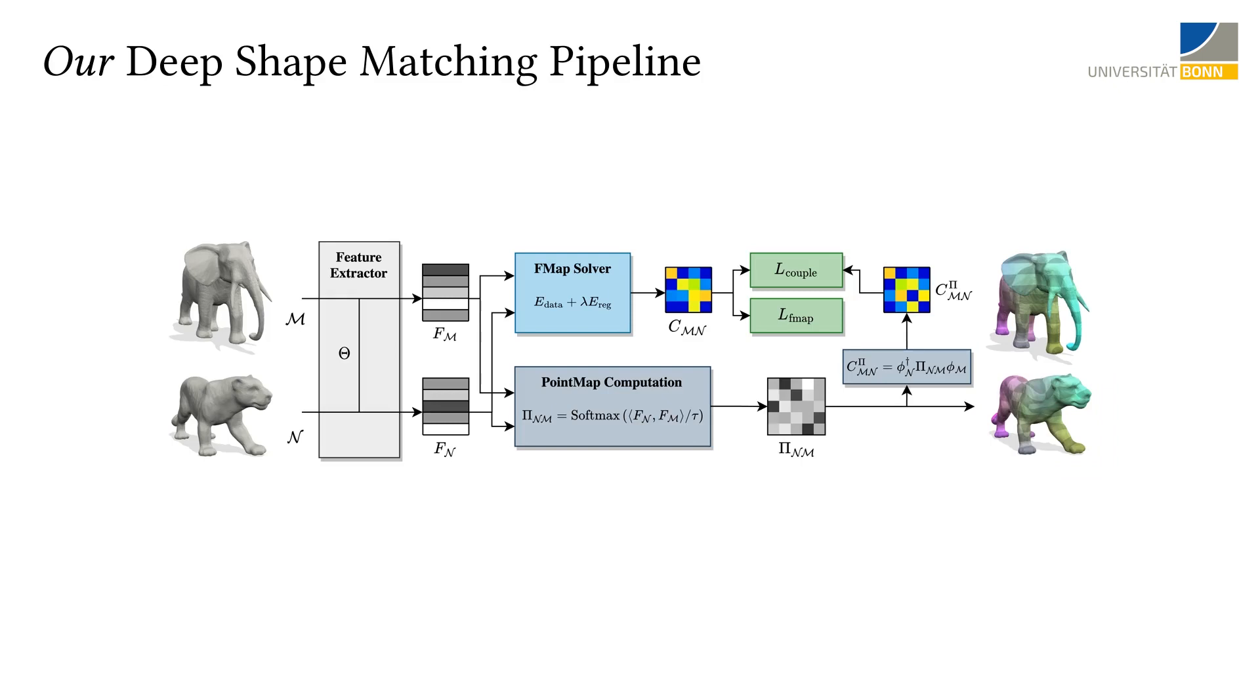Explicitly modeling this relationship between functional map and point map leads to state-of-the-art matching performance and makes our method remarkably robust in challenging scenarios.